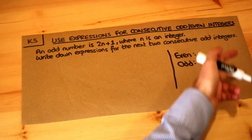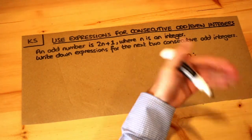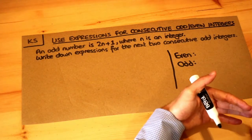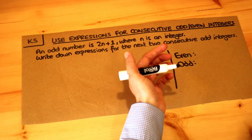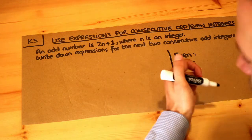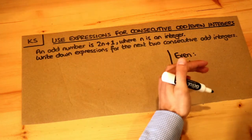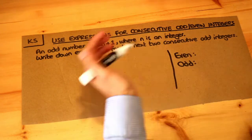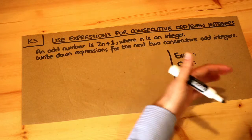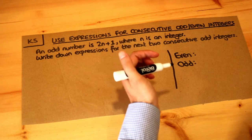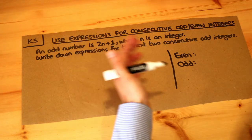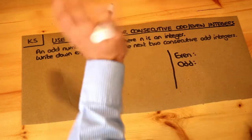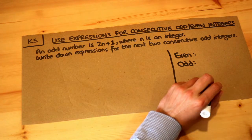The reason we use these expressions is for proving certain things — for example, prove that the sum of three consecutive numbers is always a multiple of three, or prove that the sum of three consecutive square numbers is one more than a multiple of eight, some statement like that.